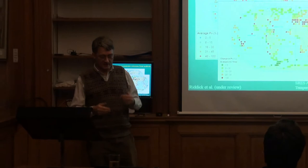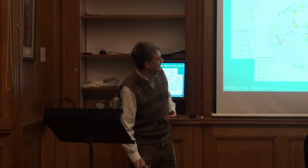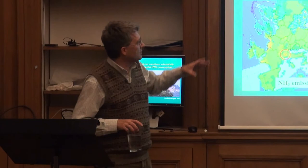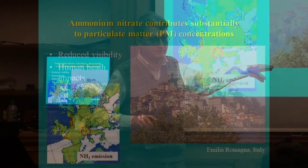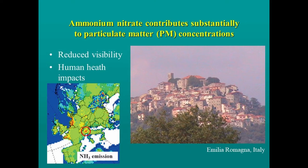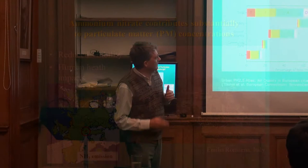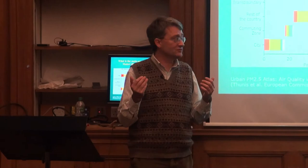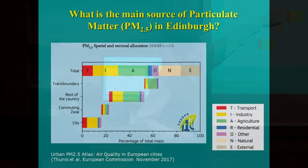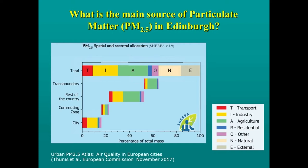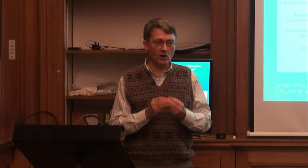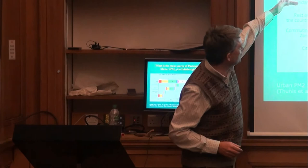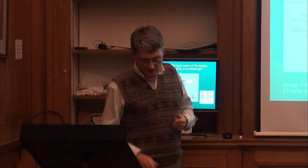On air pollution visibility: you can see a crisp tree in the foreground but the town in the background is hazy — that haze is particulate matter, especially ammonium nitrate. Interestingly, the major source of particulate matter air pollution in Edinburgh is agriculture. I was recently in the Scottish Parliament where it was all about transport, but while transport produces nitrogen oxides locally, much of the particulate matter pollution is advecting in from agricultural areas elsewhere — from the wider commuting zone.